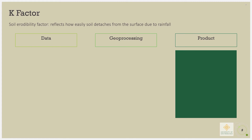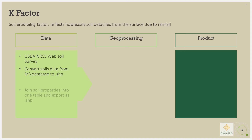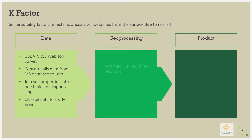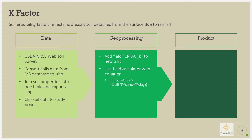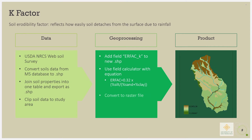The K factor, or soil erodibility factor, reflects soil types and their erosion rates. The USDA Web Soil Survey data was used to find the K factor. The silt percent, sand percent, and clay percent of the soil were joined together. The joined soil data was then clipped to the Redwood Creek watershed layer, and a new field was added to calculate the K factor using the proposed alternative soil erodibility factor equation in the field calculator. The polygon was then converted back to a raster.